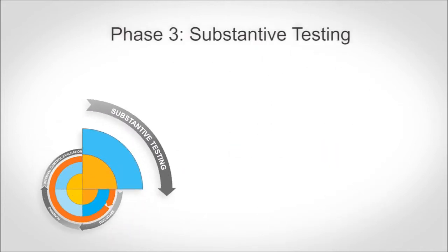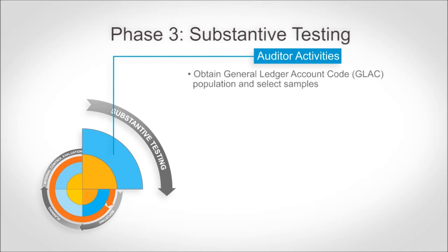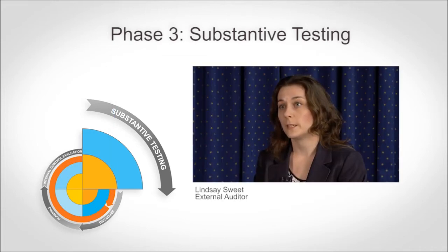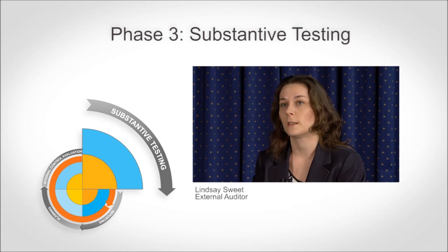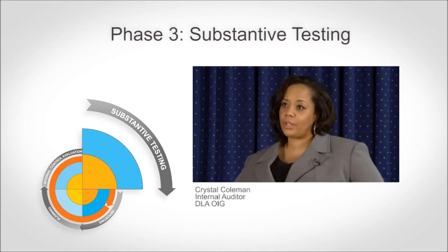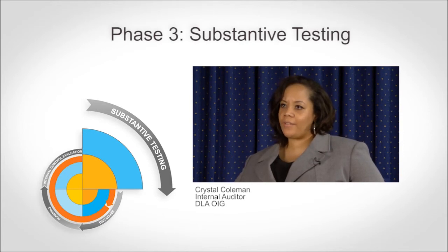In Phase 3, the Substantive Testing phase, auditors will obtain the General Ledger Account Code (GLAC) population and select samples from that population. For substantive testing, auditors select samples from usually large data populations and then perform detailed procedures over those samples. Make sure that your records are in order and easy to obtain, because auditors are going to ask for documentation — your policies, your procedures, your SOPs — so you want to have those things in order.